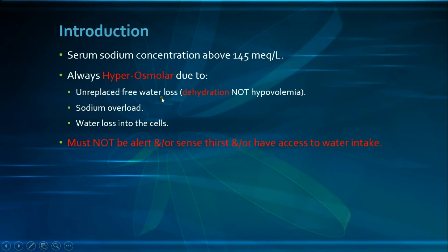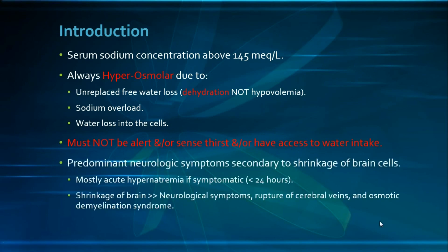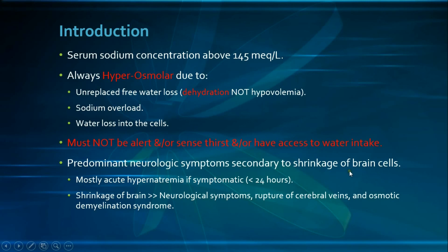Hypernatremia usually presents with neurological symptoms secondary to shrinkage of the brain cells, unlike the brain edema seen in hyponatremia. The shrinkage occurs because of the osmotic shift of water out of the brain cells into the extracellular compartment. Symptoms mostly occur in acute hypernatremia, defined as hypernatremia lasting up to 24 hours.